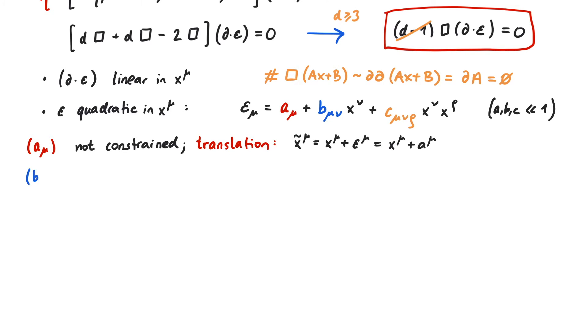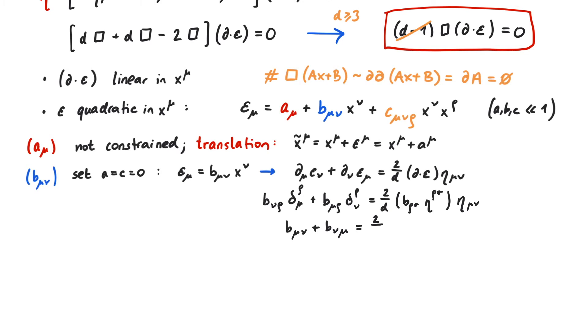To study the second term, we set a and c to 0, and plug the resulting epsilon into our initial condition for conformal transformations. This gives us the equation b_mu_nu plus b_nu_mu is equal to 2 over d. If we separate b into a symmetric and an antisymmetric part, we can extract a bit more information.